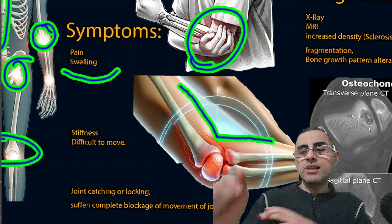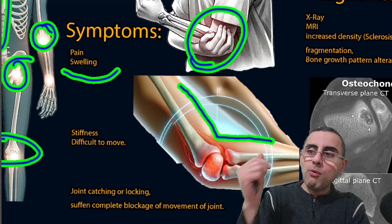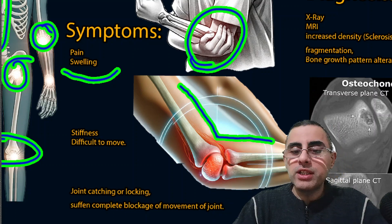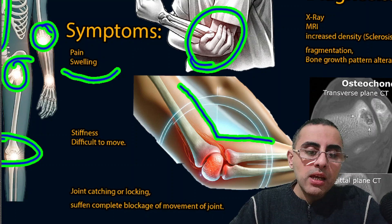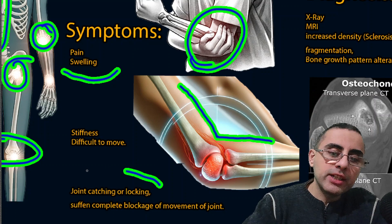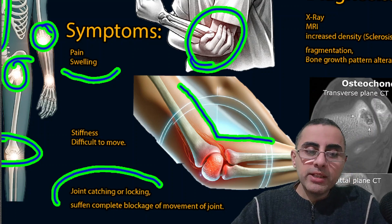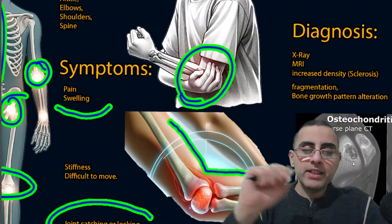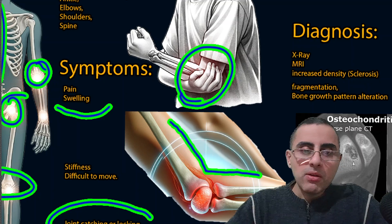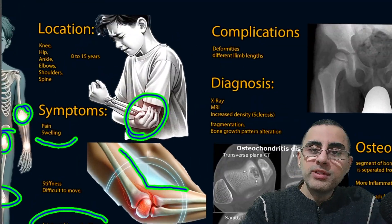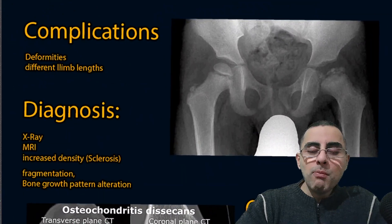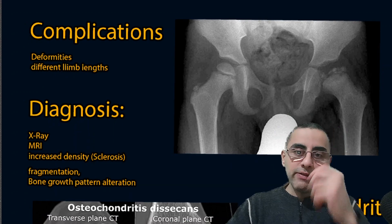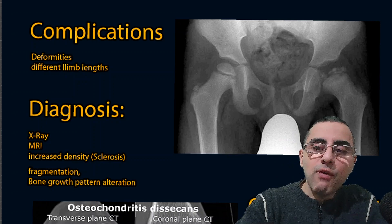Joint catching or locking means there is a sudden, complete blockage at some position and the person is unable to move their hand or leg. It is the fourth most common symptom and it is severe. Weakness is also a common symptom — the person feels weakness in the affected bones and muscles.